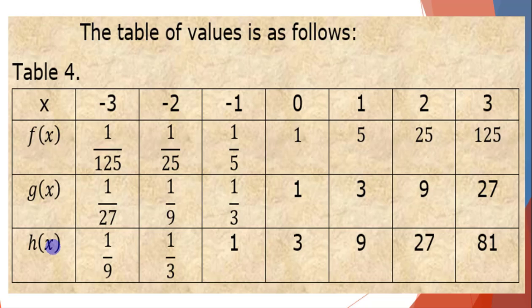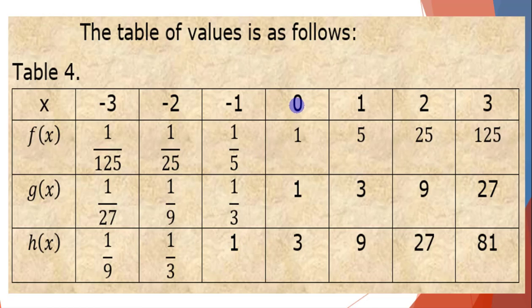For h(x) = 3 raised to x+1: h(−3) = 3^(−2) = 1/9, h(−2) = 3^(−1) = 1/3, h(−1) = 3⁰ = 1, h(0) = 3¹ = 3, h(1) = 3² = 9, h(2) = 3³ = 27, h(3) = 3⁴ = 81.